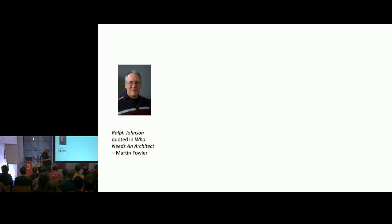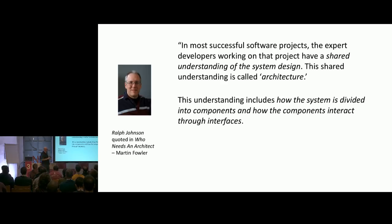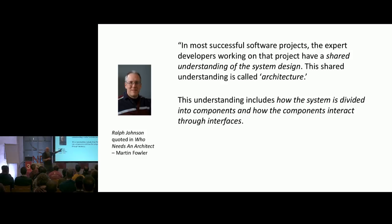Ralph Johnson — who Fowler quoted in 'Who Needs a Software Architect?' as the originator of the 'hard to change' statement — actually had a lot more to say. He said the architecture is 'the shared understanding of the system by the expert developers' — how you and I effectively say 'how does this system work?' One of the important things for him was the notion of how the system is partitioned and how those parts talk to each other. Architecture isn't necessarily all the details — there's a certain amount of abstraction.